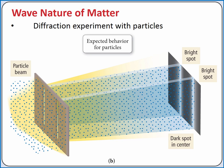If we run a diffraction experiment with a beam of particles, the particles will pass straight through our slits without diffracting and produce two bright spots on our film corresponding to the two slits.